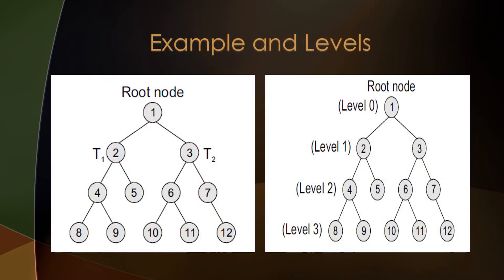The left image is an example of a binary tree and the right image shows the levels in a binary tree. The root node is always at level 0, its children at level 1, their children at level 2, and so on. The levels in a binary tree can be extended up to infinite levels, as there are no limitations on the construction of a binary tree.